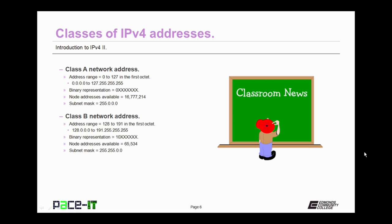Then there are Class B network addresses. They have an address range of 128 to 191 in the first octet, meaning Class B networks can range from 128.0.0.0 up to 191.255.255.255. The first octet always has a binary representation beginning with 10. Class B network addresses give us a possible 65,534 hosts, and the subnet mask is always 255.255.0.0.